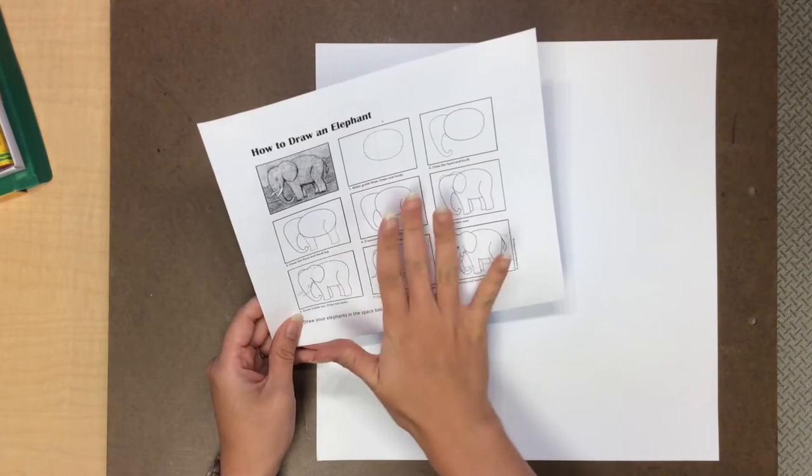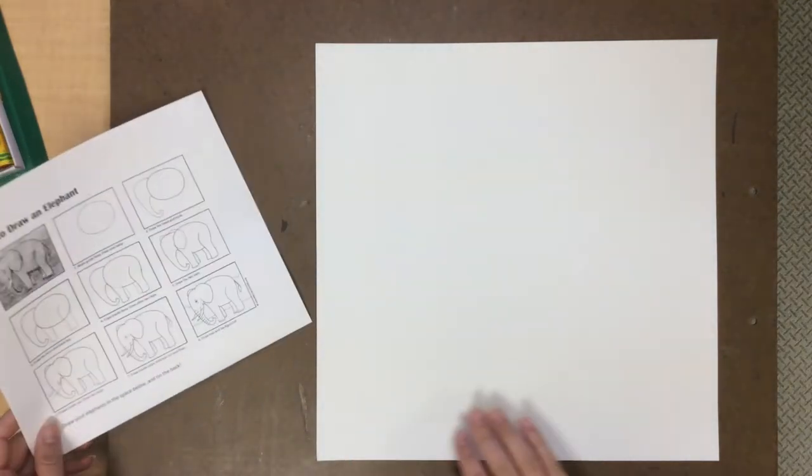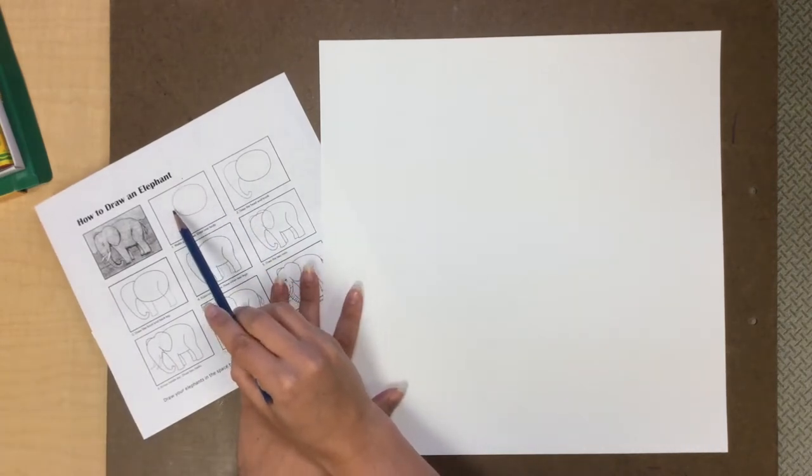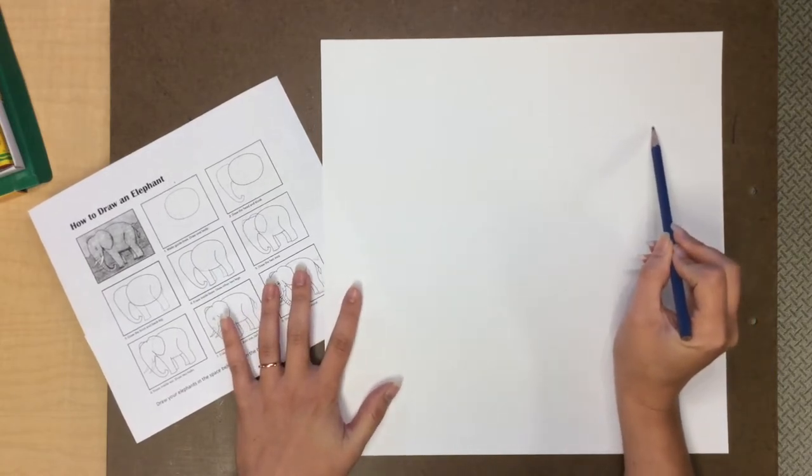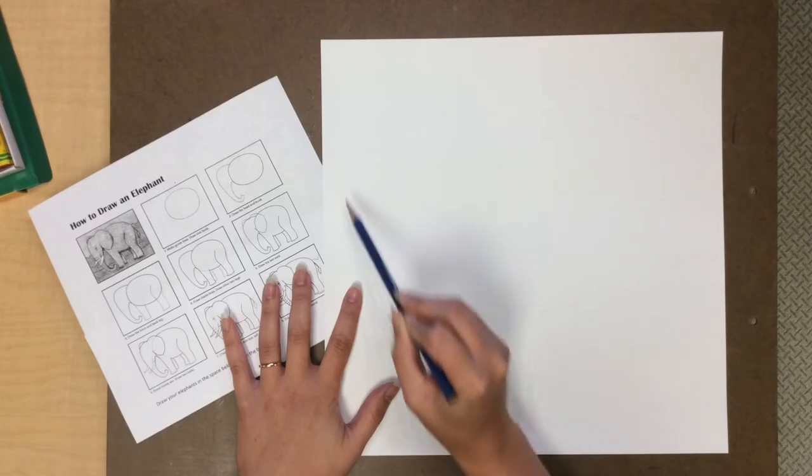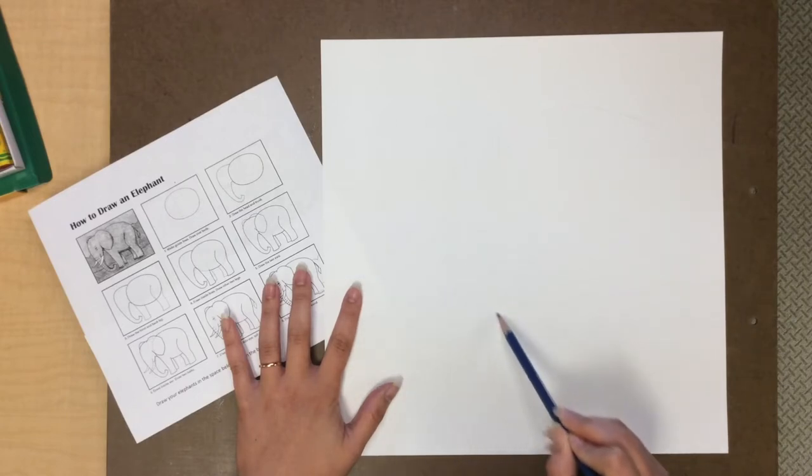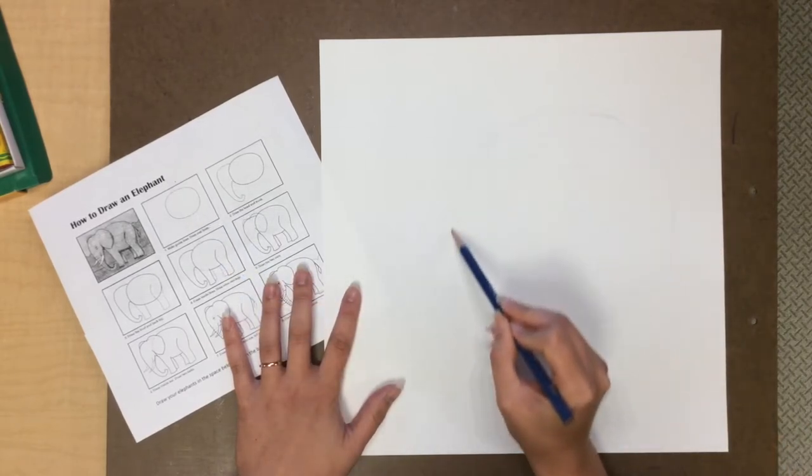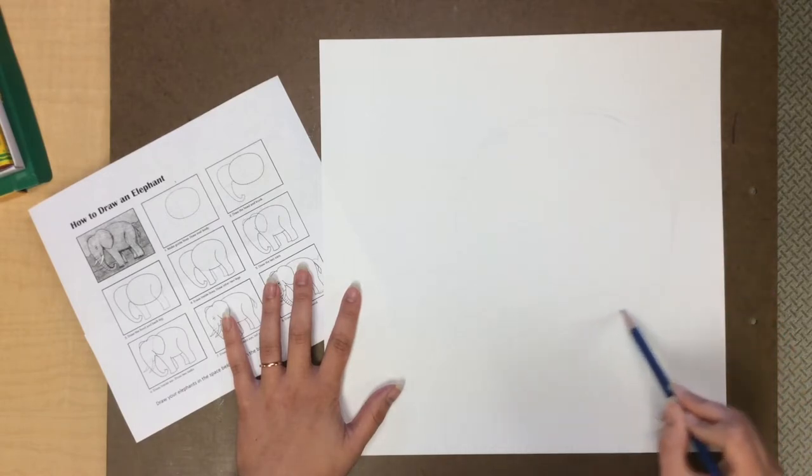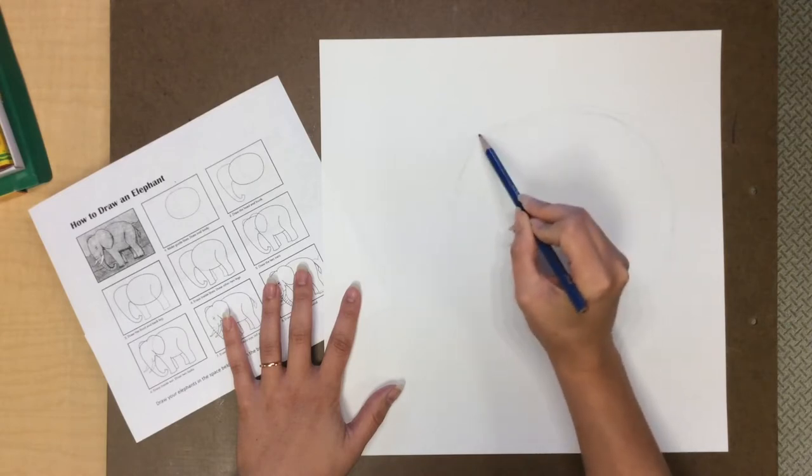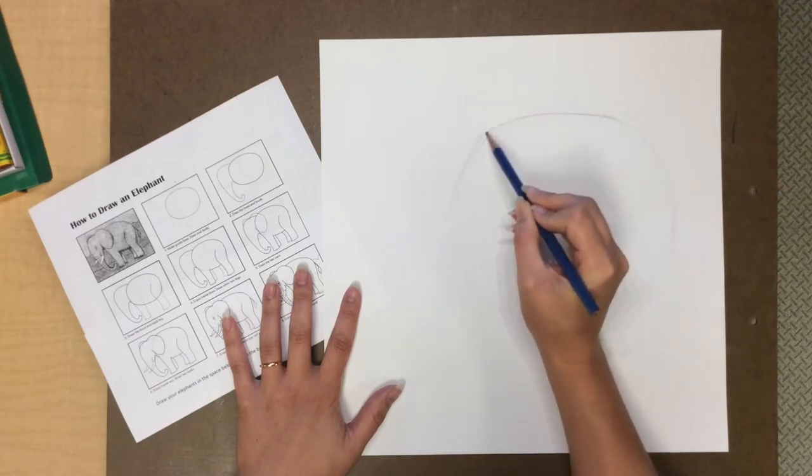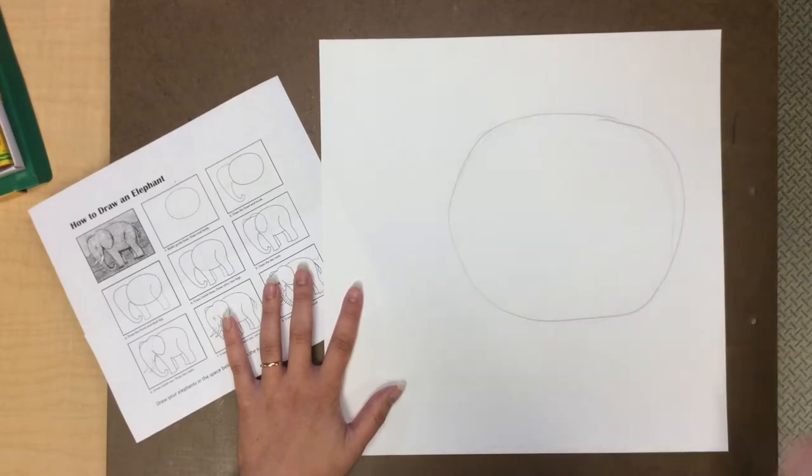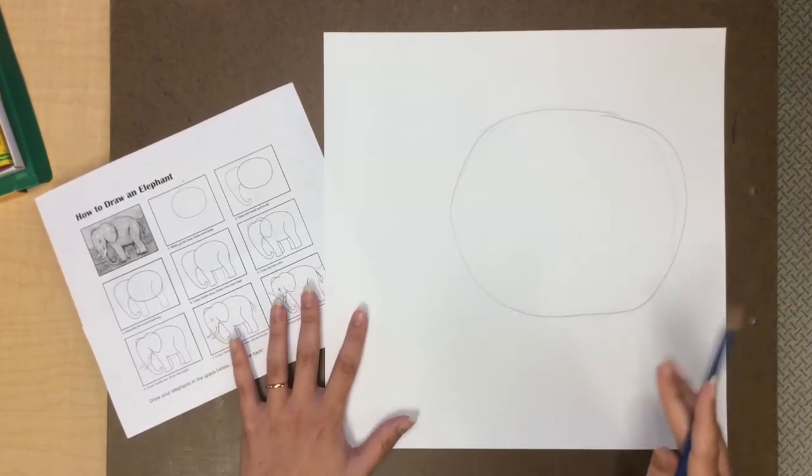So we're going to follow the steps one by one and it will show us what shapes we need to draw in order to do an elephant. Step one shows us that we need to draw a big circle for the body. I'm gonna kind of scooch my circle off to one side so that I have room for my head on the other side. And you can tell from the picture it does not need to be a perfect circle. And I'm drawing lightly first that way if I make a mistake I can erase. When I think I have it right I can make it a little bit darker. There's my circle. Not perfect but I think it's gonna make a great elephant body.